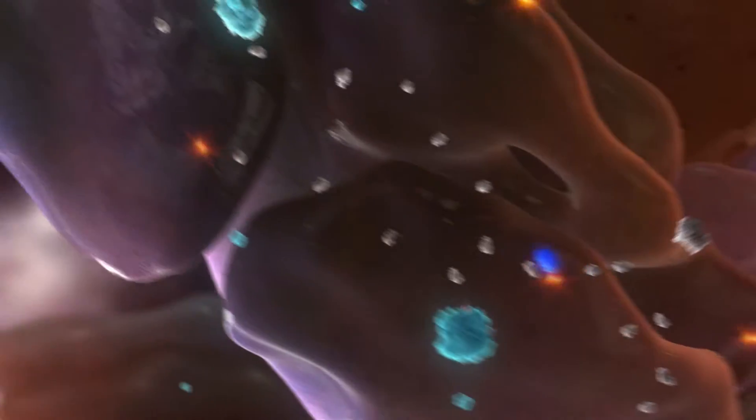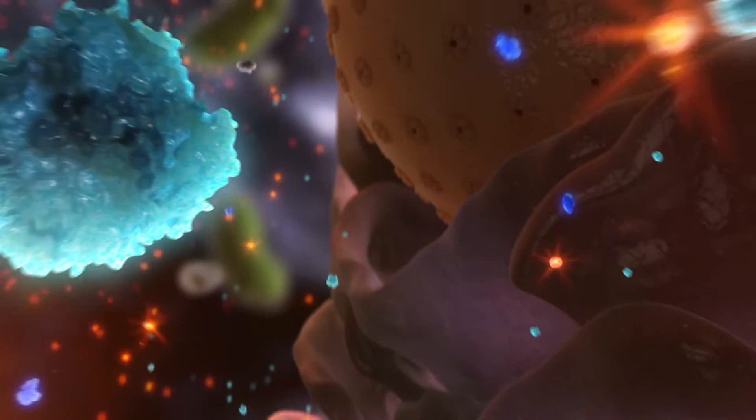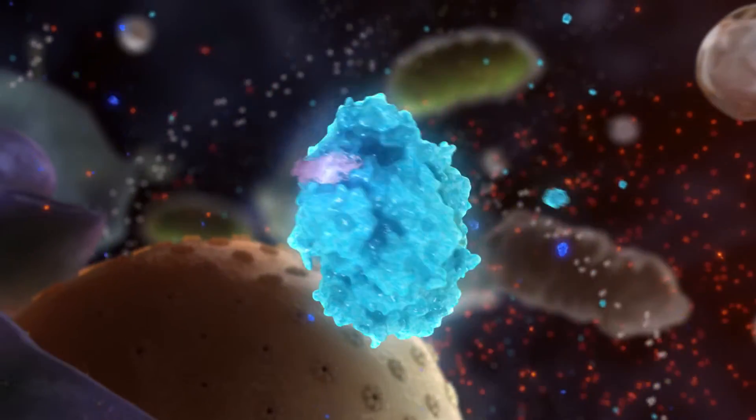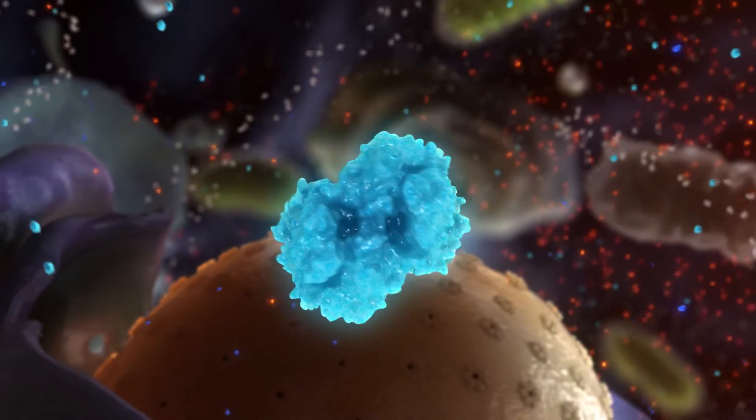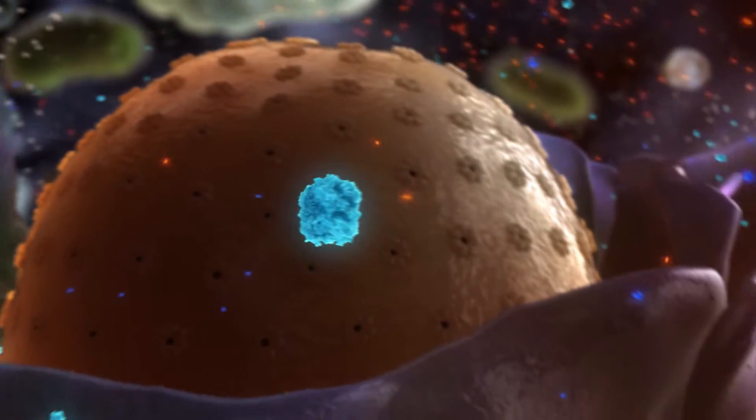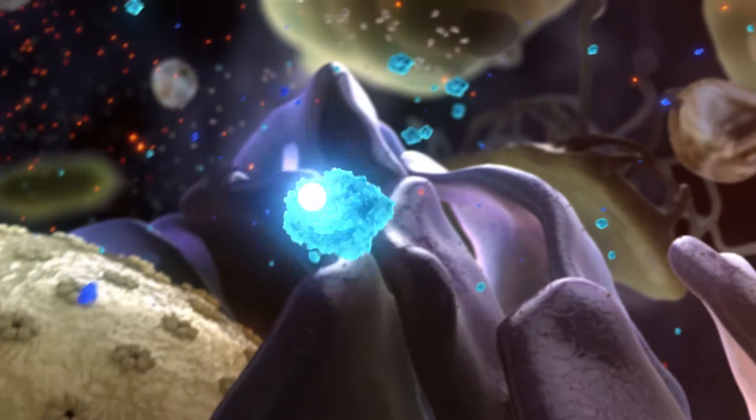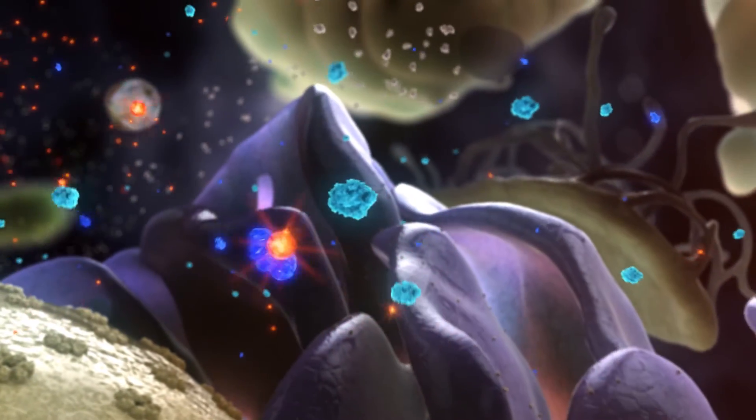You can get many antioxidants through healthy nutrition and even more through supplementation, and your cells are designed to produce their own. USANA's InCelligence technology within CellSentials can optimize your body's natural ability to generate its own antioxidants.